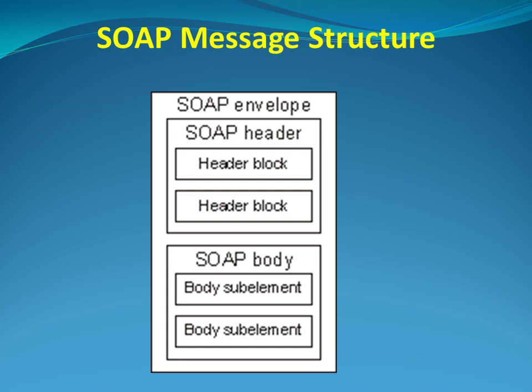The SOAP body is a mandatory sub-element of the SOAP envelope. It contains information for the ultimate recipient of the message. The SOAP fault is a sub-element of the SOAP body and is used for reporting errors. Except the fault element in the body of the SOAP message, XML elements in the header and the body are defined by the applications that use them.